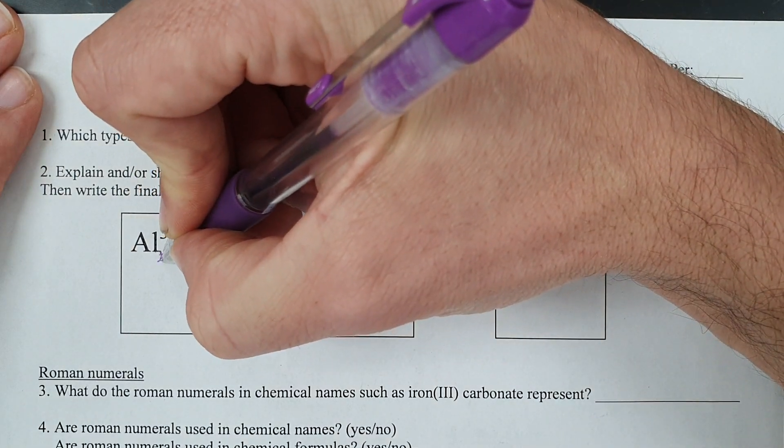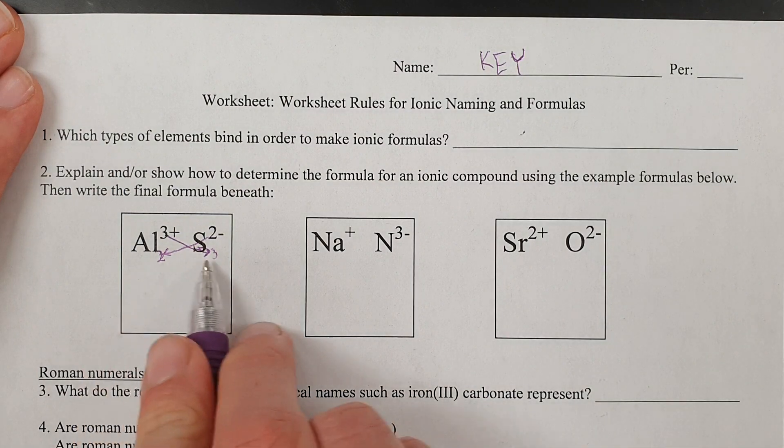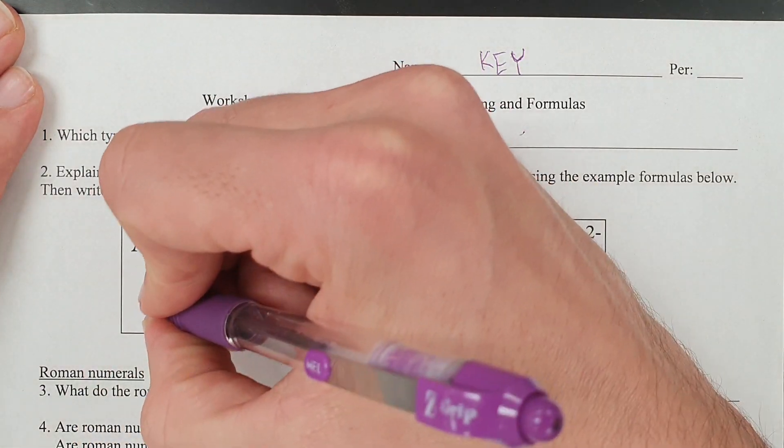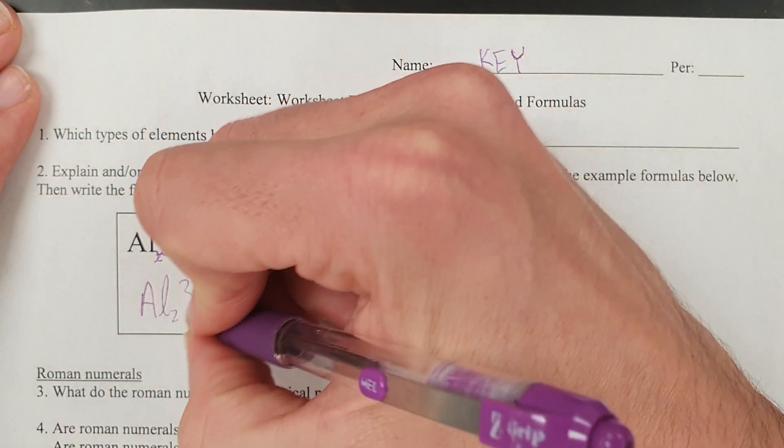That's meant to be a 2. So that's 2 aluminums and 3 sulfurs.